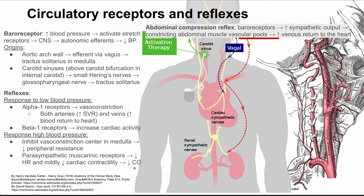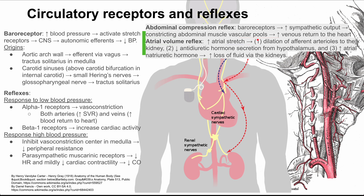Now let's talk about some other reflexes. The abdominal compression reflex is when baroreceptors can increase cardiac output and cause constriction of abdominal muscle vascular pools that increase venous return to the heart. The atrial volume reflex occurs in response to increased atrial stretch. When the upper chambers of the heart stretch too much, your body responds by dilating the afferent arteriole going to the kidney, decreasing antidiuretic hormone secretion from the hypothalamus, and increasing atrial natriuretic hormone. These all increase fluid loss via the kidneys, decreasing your blood pressure.